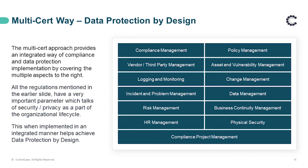When we look at it holistically, we understand that each certification or regulation in isolation would achieve a subset of data protection. But when we put them together, they will ensure that data protection — meaning privacy plus security — is achieved. All the regulations mentioned have very important parameters which talk of security or privacy as part of the organizational life cycle. This, when implemented in an integrated manner, helps achieve data protection by design. And most importantly, as all these certifications have their continuous compliance requirements, the continuous maintenance of data protection throughout the life cycle as required by data protection by design is efficiently and effectively achieved.